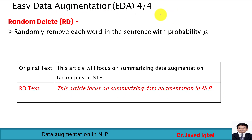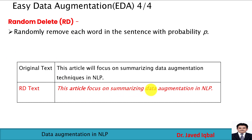The next easy data augmentation technique is random delete. In this technique, we randomly remove each word in the sentence with probability p. For the original text, we randomly remove two words. The new sentence after applying random deletion is 'this article focus on summarizing data augmentation.' The meaning of the sentence is not changed, so while applying this technique we should ensure the meaning of the sentence is preserved.